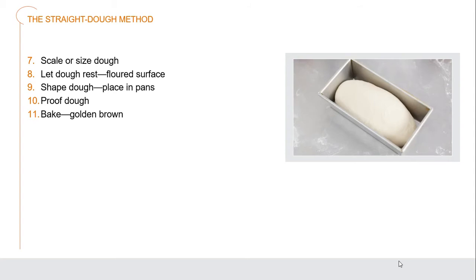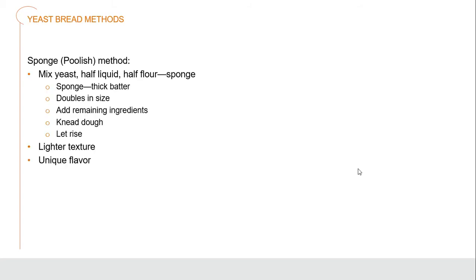After letting the gluten relax during the rest period, shape the dough into the specific sizes and shapes you want — individual rolls or a full loaf — and place it into the pan. Proof it one last time in the actual pan so it gets a good rise, then bake until golden brown. When placed into the oven, you'll get one last spring of energy before the yeast is killed at 140°F — the bread rises a little more in those first few minutes of baking.